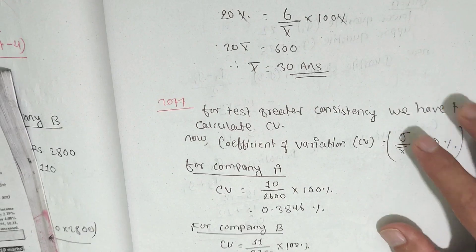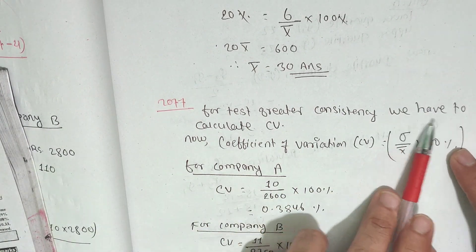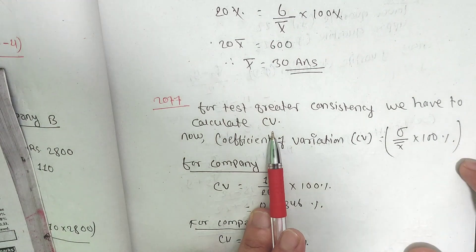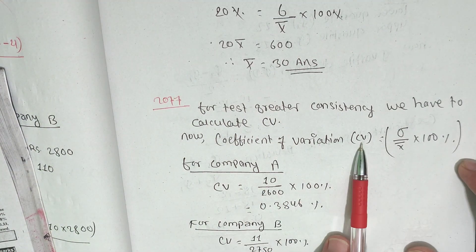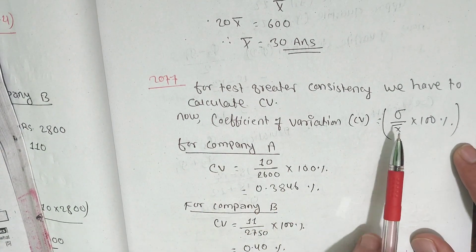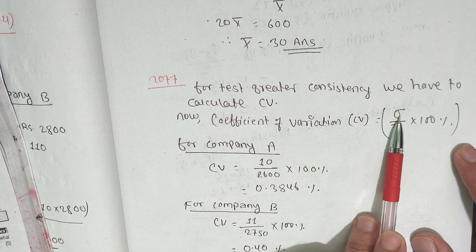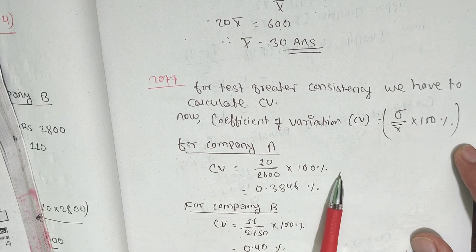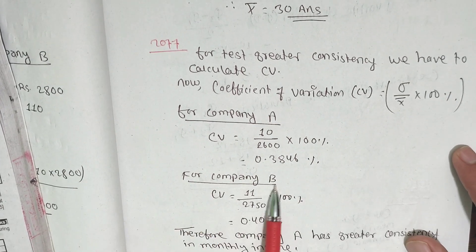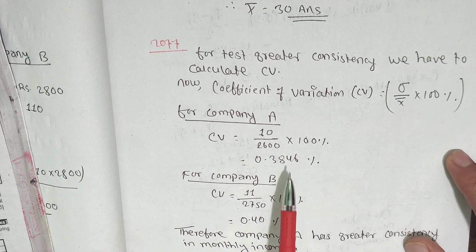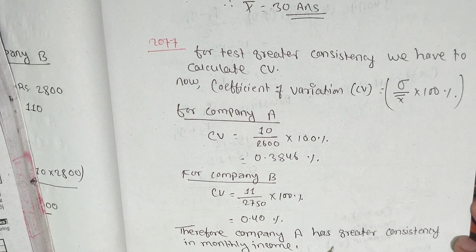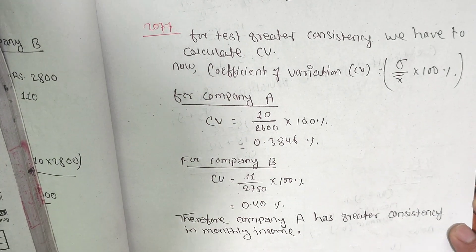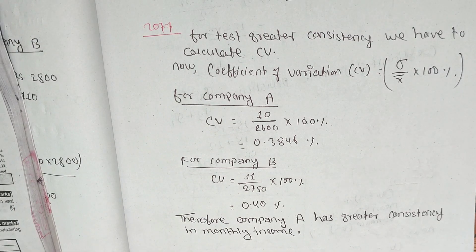We have to calculate CV for each company. The formula is CV equals sigma (standard deviation) divided by x-bar (mean) into 100. The company with greater consistency has less CV.